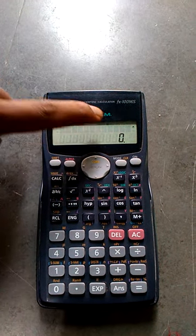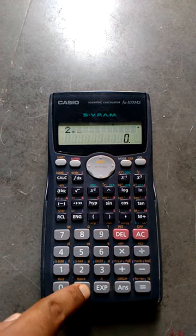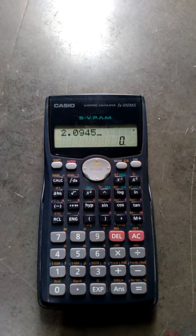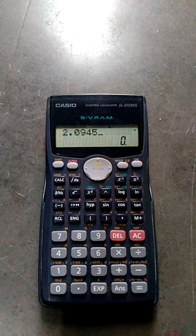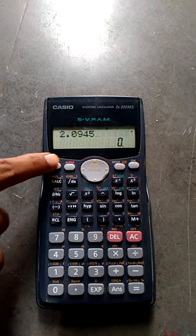So then you take one of the value, that is 2.0945. It is a radian to be converted into the degree. So you need to convert it into the degree. First of all, you press the shift button which is on the top of the left side of the calculator.